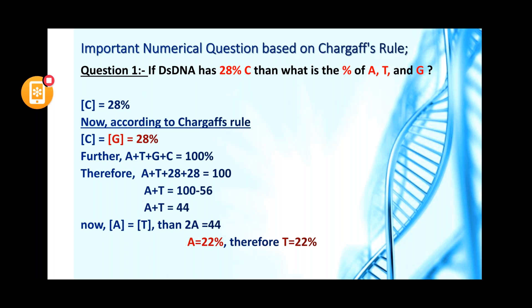In this question, it is given that 28% is cytosine in the double-stranded DNA. We have to find the percentage of adenine, thymine, and guanine. According to Chargaff's rule, the concentration of cytosine equals the concentration of guanine. Cytosine is already given as 28%, therefore guanine is also 28%. The second principle of Chargaff's rule is that adenine plus thymine plus guanine plus cytosine equals 100.